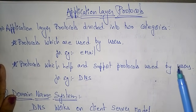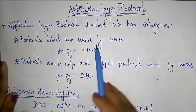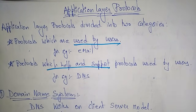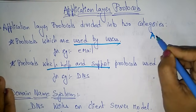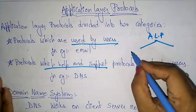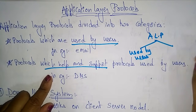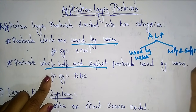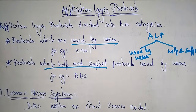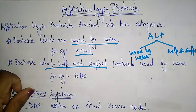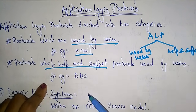The application layer protocols are divided into two categories. One is the protocols which are directly used by the users, and the other is the protocols which help and support the protocols used by the user. For example, email is directly used by the users, whereas DNS — Domain Name System — is a help and support protocol used by the user.